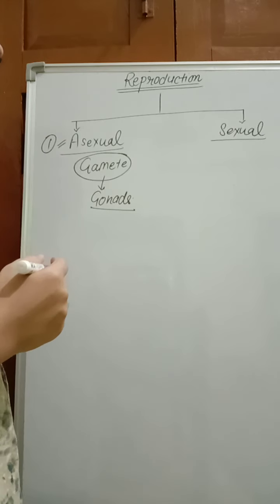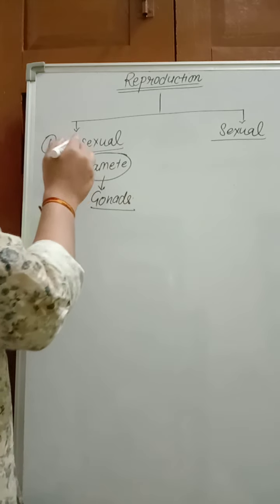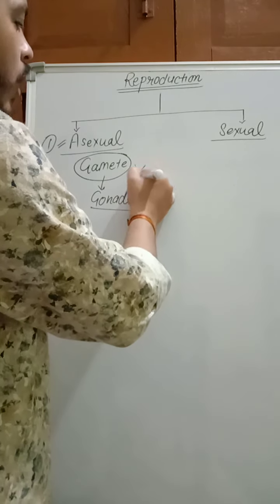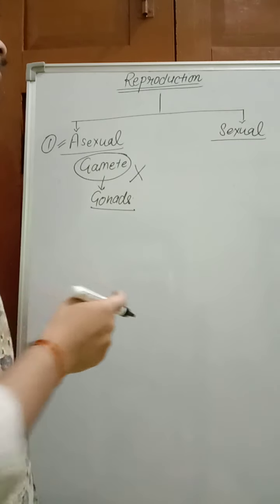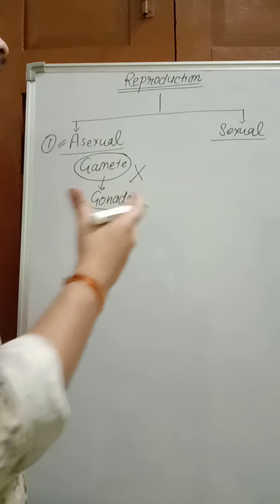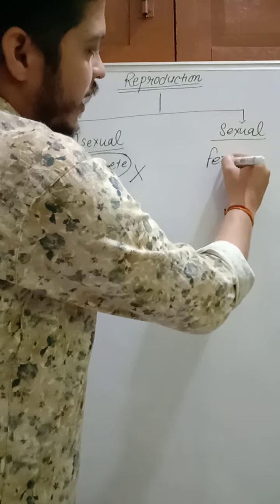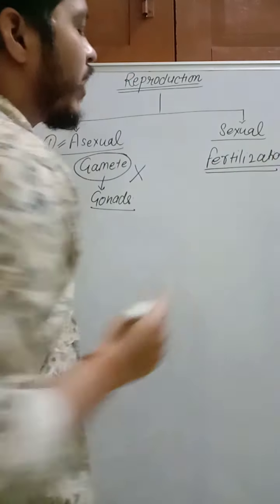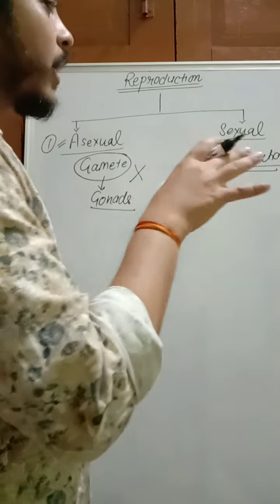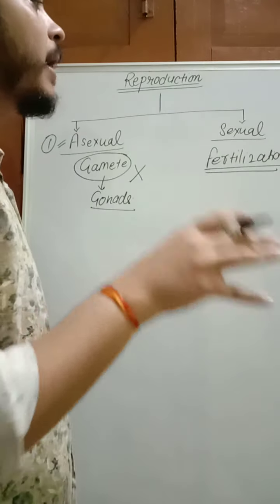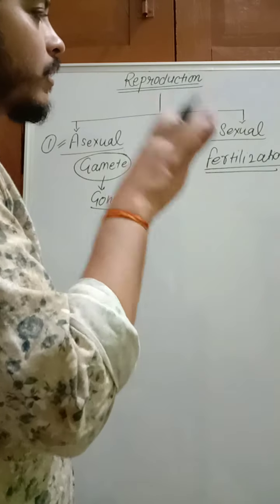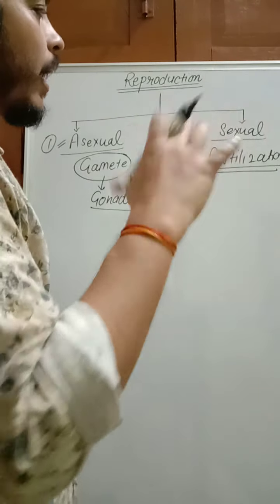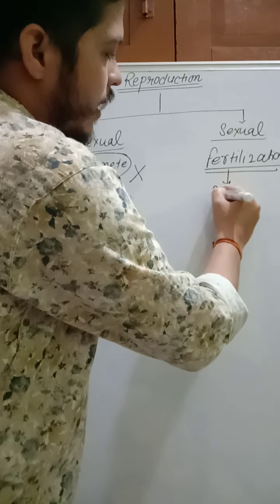Males produce sperm and females produce ovum. In asexual reproduction, there is no involvement of gametes. In sexual reproduction, there is involvement of gametes and fertilization takes place. Fertilization is a process of fusion — fusion of male and female gametes. When sperm are fused with ovum, a zygote is formed. That process is called fertilization.